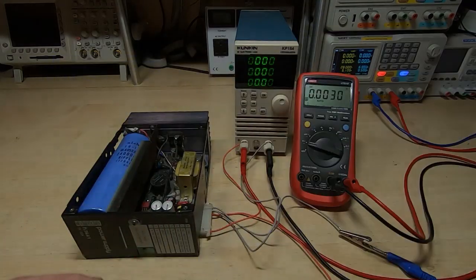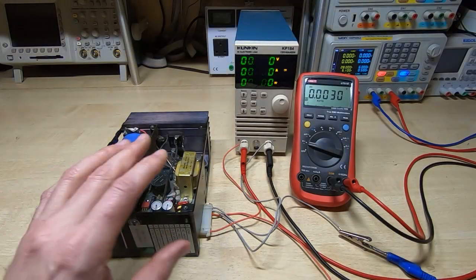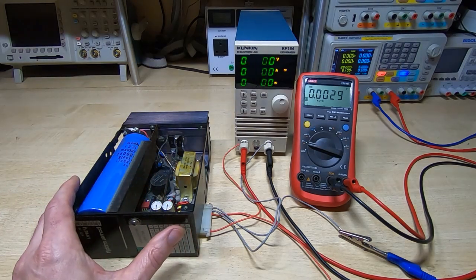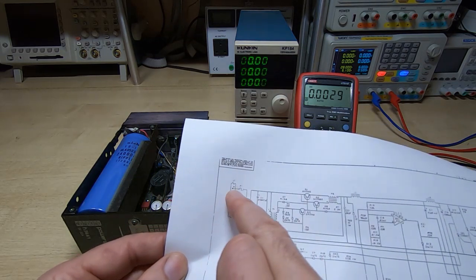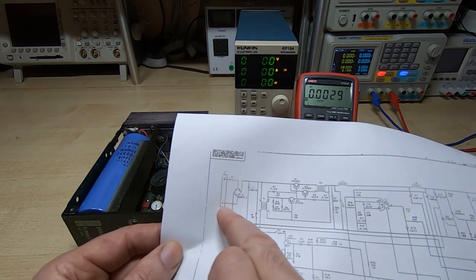To hook it up, if you look at the diagram, you can see pins 6 and 7 are the inputs. We're going to feed DC into that from our DP6062 supply.